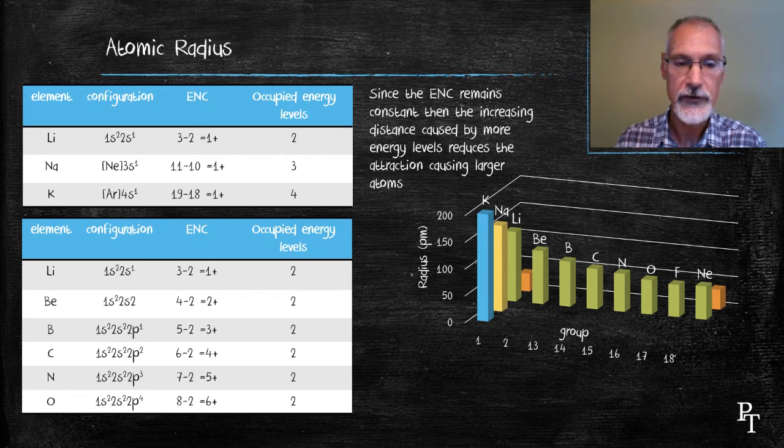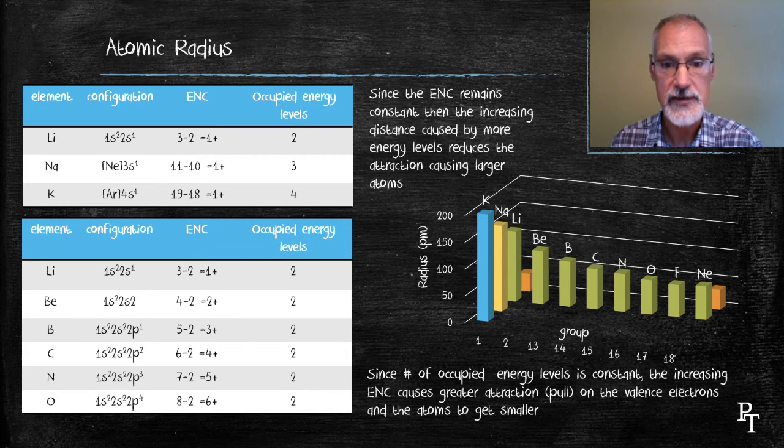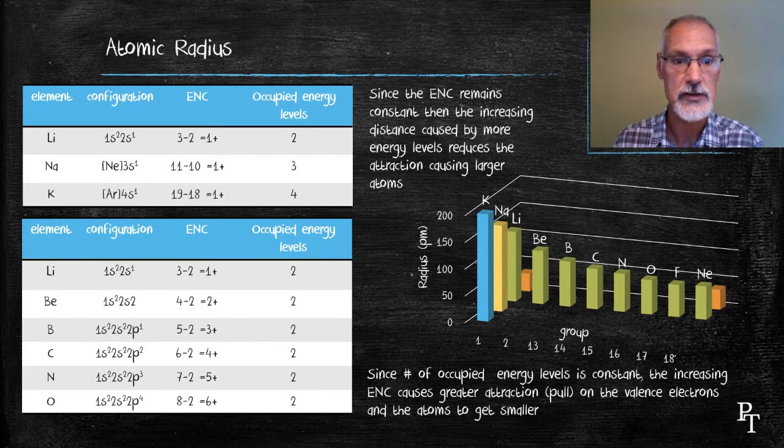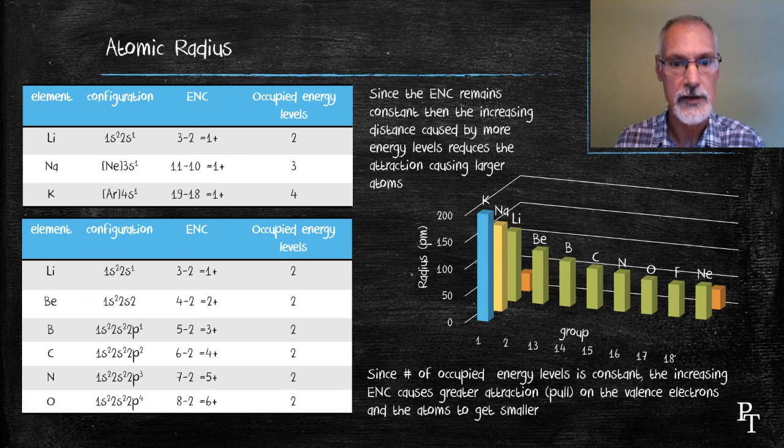They also all have the same number of occupied energy levels. So as a result, my atoms get smaller because distance really isn't an effect. The distance is remaining essentially constant because my occupied energy levels are remaining constant. But what is increasing is the effective nuclear energy levels, which pulls harder on the electrons in the valence shell, bringing them in closer.